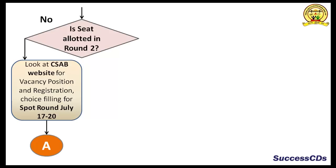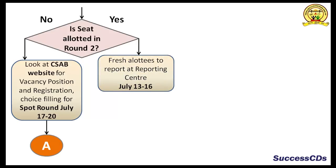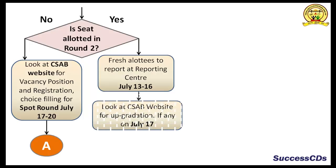And you will be named as candidate A. And if yes, the freshly allotted candidate has to report at the reporting center from July 13th to July 16th. And then look at the CSAB website regularly for upgradation if any on 17th July. And you are candidate B.